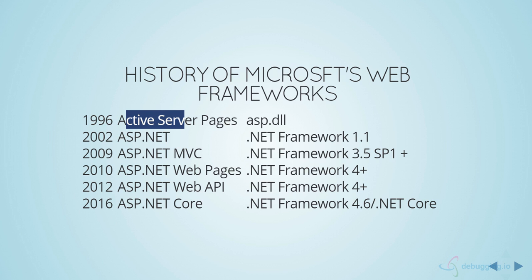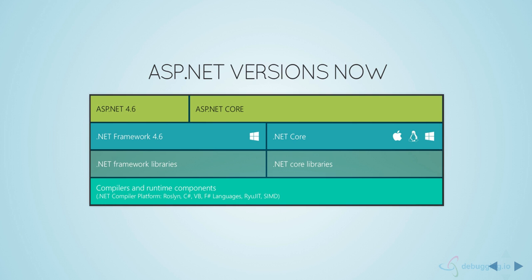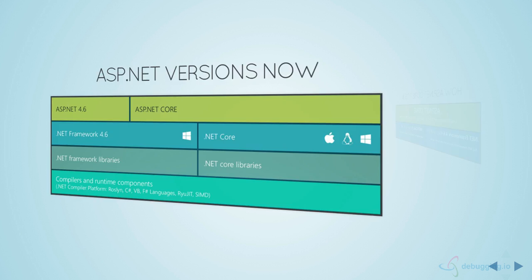Microsoft has now released ASP.NET 4.6 and ASP.NET Core. ASP.NET Core is completely open source and can run on any OS, unlike previous versions of the .NET framework. ASP.NET 4.6 can only run on .NET Framework 4.6, while ASP.NET Core can run on all versions of .NET Framework, but if you choose other platforms you need to target .NET Core. The compiler and runtime components are shared between .NET Core and .NET Framework 4.6.